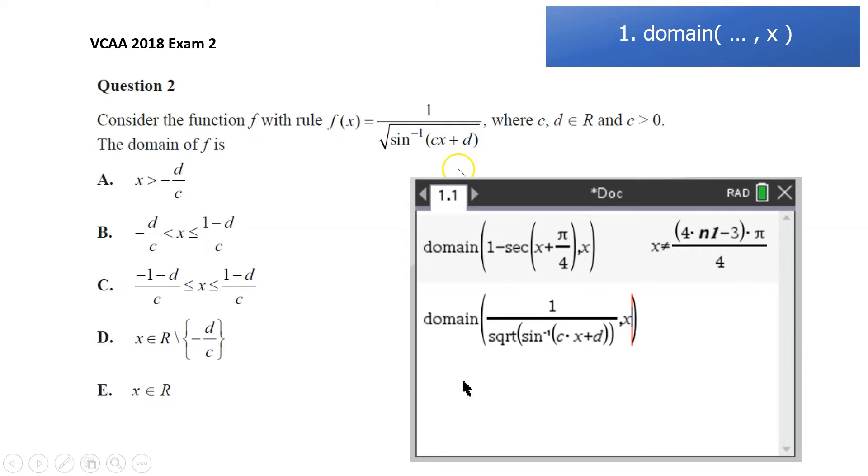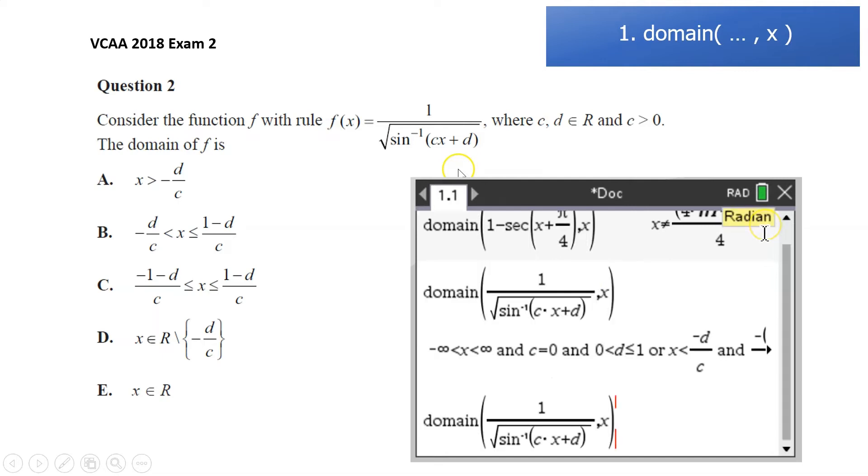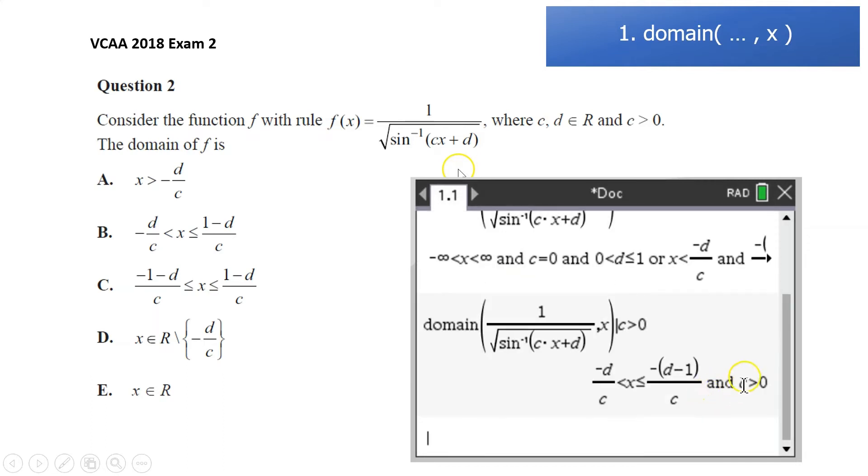1 over square root of inverse sine of cx plus d, c times x plus d. Again, we need the comma x. And this one is kind of interesting because if we just do it like that, it's giving us all these conditions for c equals 0, d between 0 and 1. And if we look at the question, it actually tells us c has got to be greater than 0. So if we put that information into the CAS calculator, just using our vertical line, so control equals, given that c is greater than 0, it actually uses that to simplify it and give us this, which is actually quite similar to what's in the options. Negative d on c to negative d. So it's option B there.